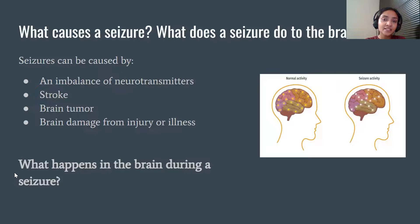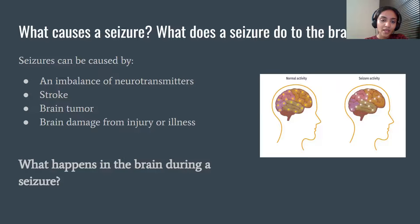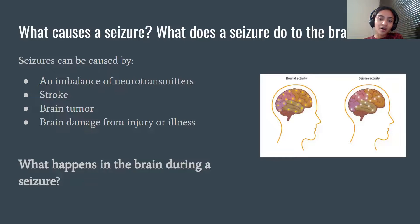What exactly causes a seizure and what does it do to the brain? Seizures can be caused by a variety of things, including an imbalance of neurotransmitters or hormones in the brain, a stroke, a brain tumor, or brain damage from an injury or illness. To explain what happens in the brain during a seizure, we should understand that our brains are always generating electrical pulses that control everything from our movement, thoughts, and memories. These electrical pulses are transmitted by neurons, which are a network of cells found in the brain and throughout the rest of the body.